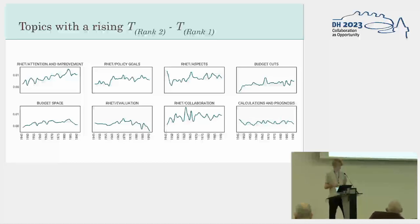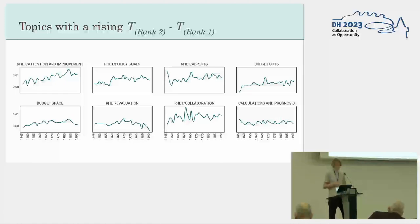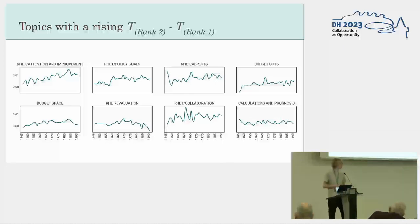The topics that are increasing in this subtracted rank trend are often about more structural issues. They are rhetorical tropes and are often about economic issues as well — budget space, evaluation, calculations and prognosis, budget cuts. So you can already see signs here of some instances of economisation.